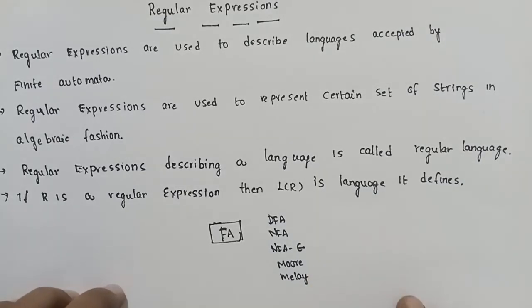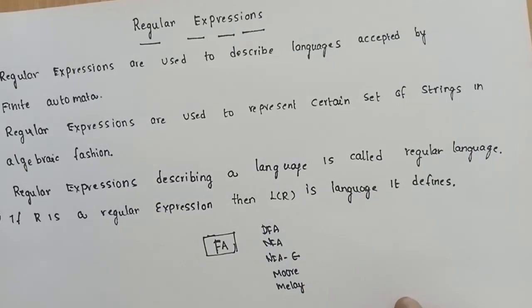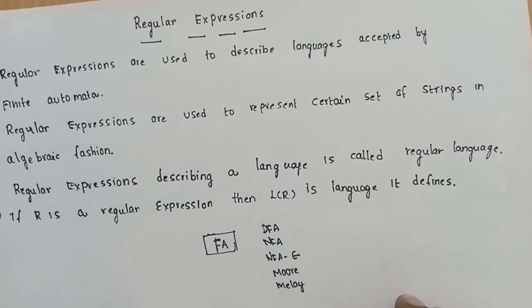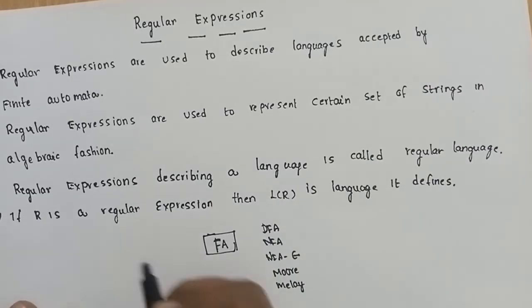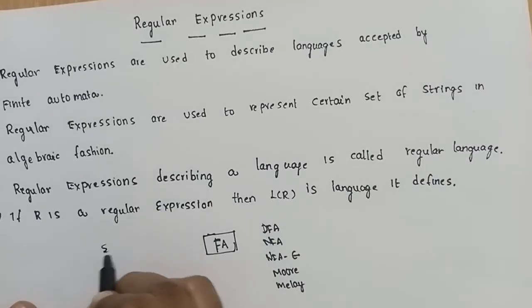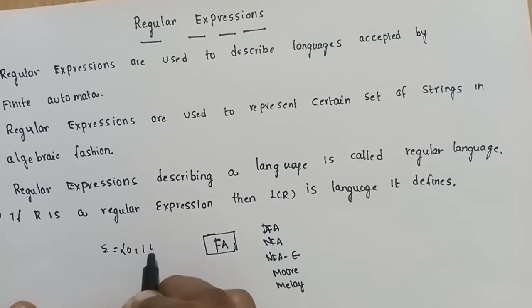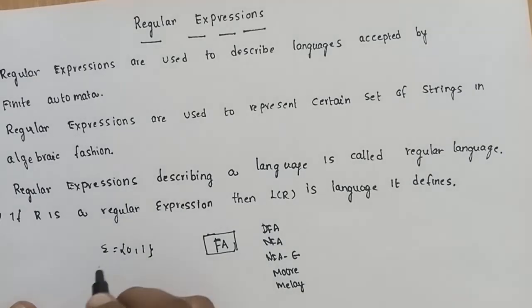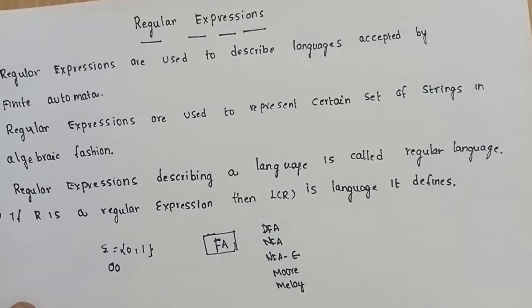Suppose I am going to talk about a finite automata with input symbol sigma = {0, 1}. I want to set up all strings which end with 00.